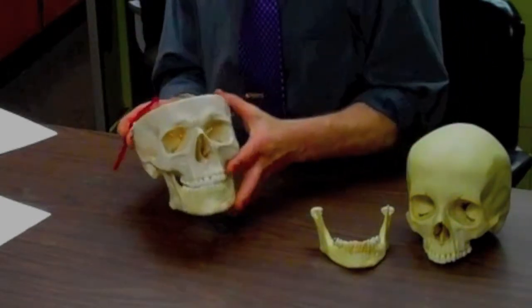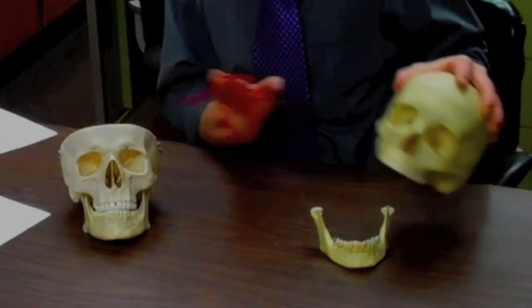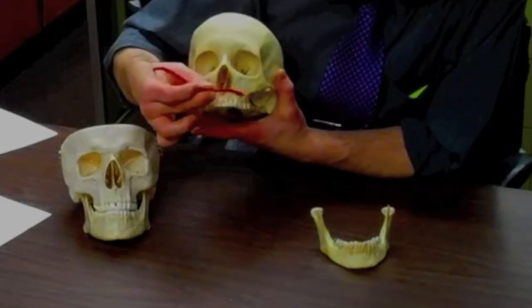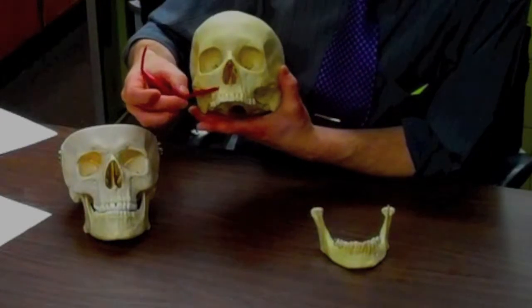Alright so this gets us to the facial bones, and the first facial bone I'd like to touch on is the maxillary bone. The maxillary bone is basically our upper teeth bone, where our upper teeth come in.